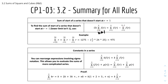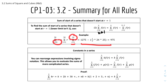For example, the sum of r from r equals 25 to 50 — since 25 is not 1, we split it into the sum of r from r equals 1 to 50, minus the sum of r from r equals 1 to 24. Because 24 is 25 minus 1. Then just solve from there.